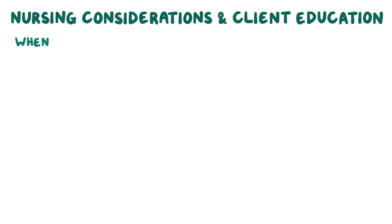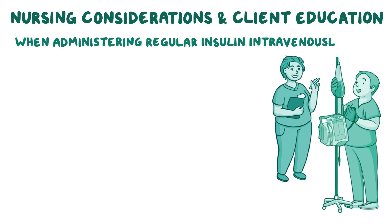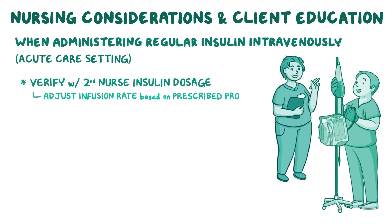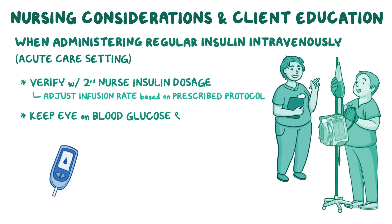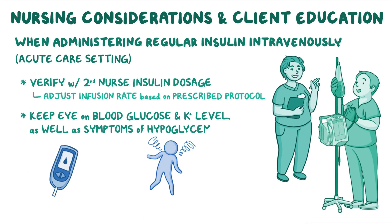When administering regular insulin intravenously in an acute care setting, verify with a second nurse the insulin dosage against the prescribed order. Adjust the infusion rate based on the prescribed protocol, and monitor the client's blood glucose and potassium levels closely, as well as for symptoms of hypoglycemia.